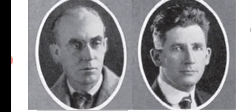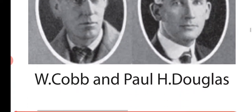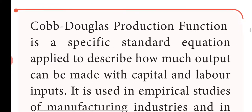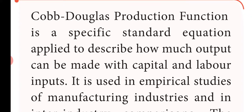The Cobb-Douglas production function is a specific standard equation used to describe how much output can be made with capital and labour inputs. These are the two factors of production, and this standard equation relates them to output.